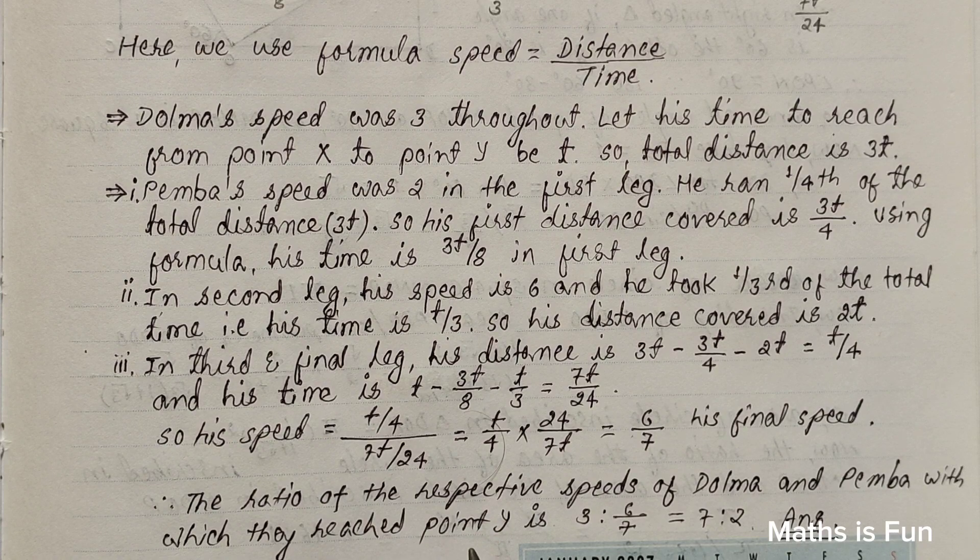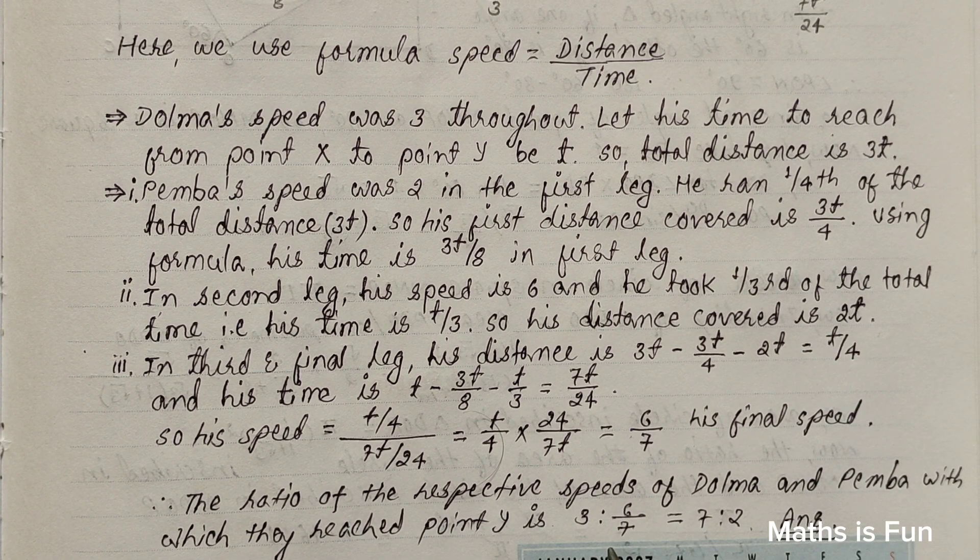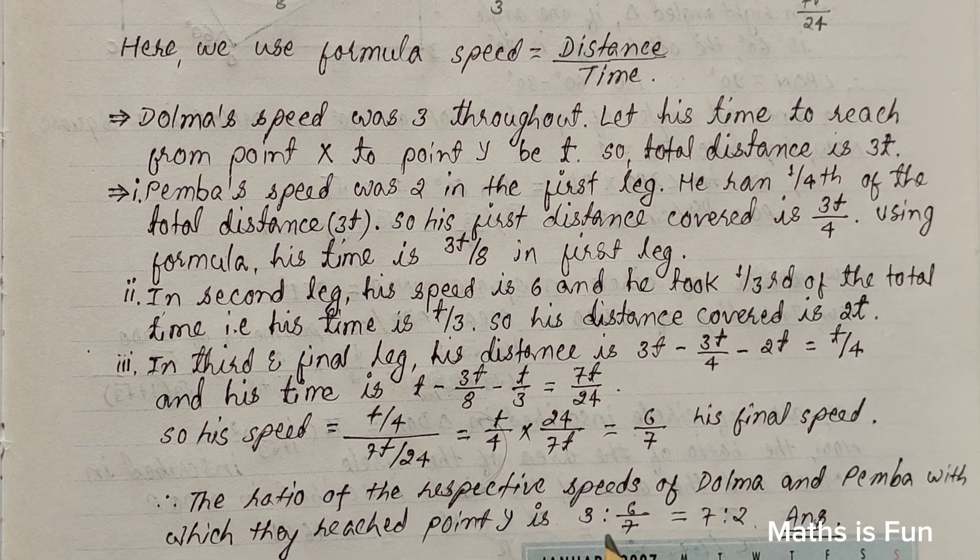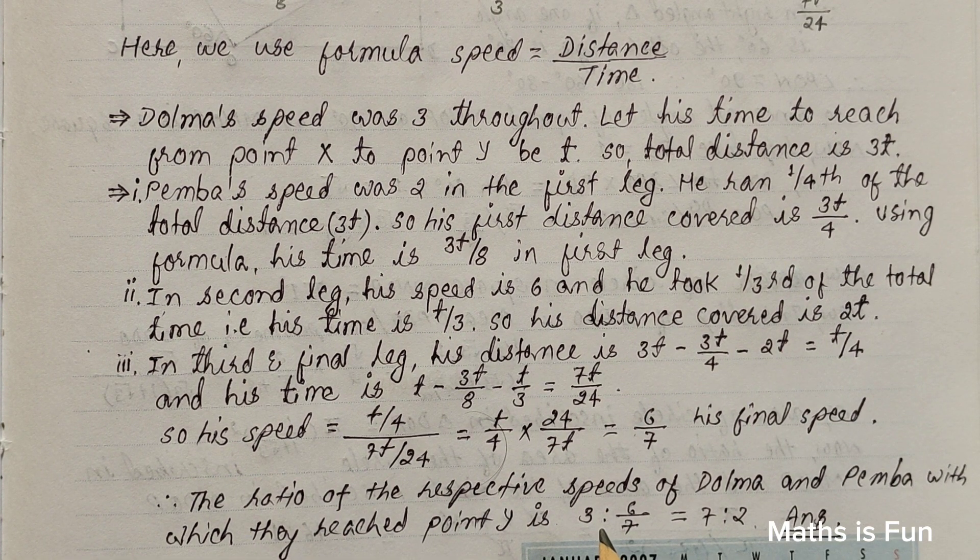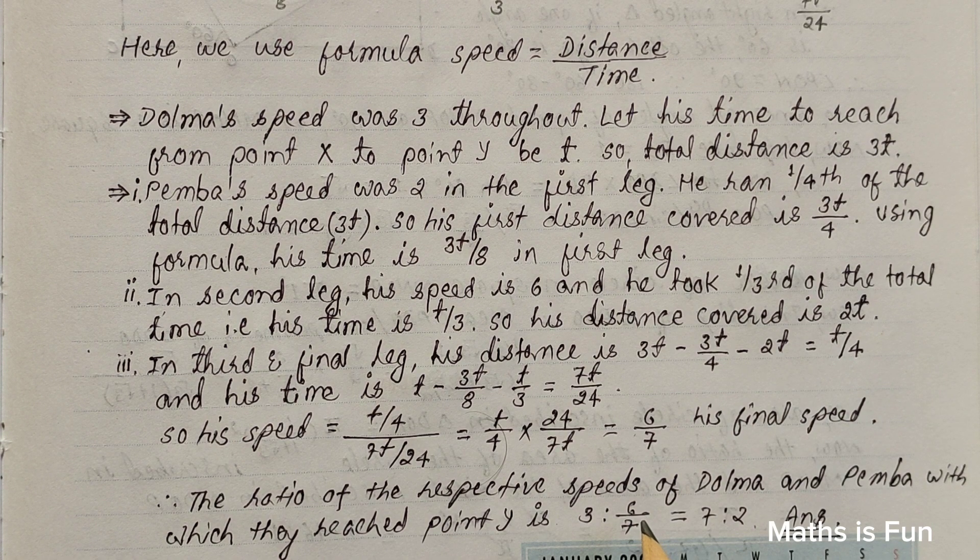So the ratio of the respective speeds of Dolma and Pemba with which they reach point Y is 3 ratio 6 over 7. 3 is the speed of Dolma, which was uniform, and 6 over 7 is the final speed of Pemba.